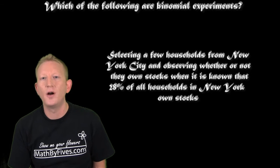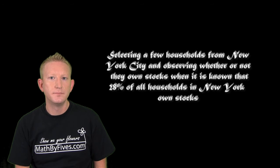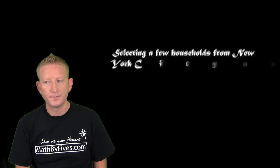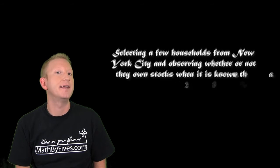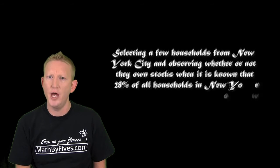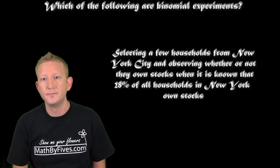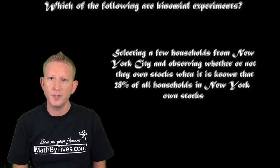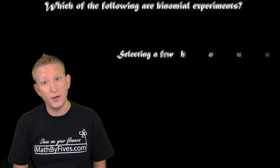All right. So now are there n distinct trials? What does a few mean? Not sure. If you're assuming that a few means countable and that means there is an n, then that is satisfied. So there are n trials. Next, does each trial have only one of two outcomes? Uh huh. Either they own stocks or they don't.